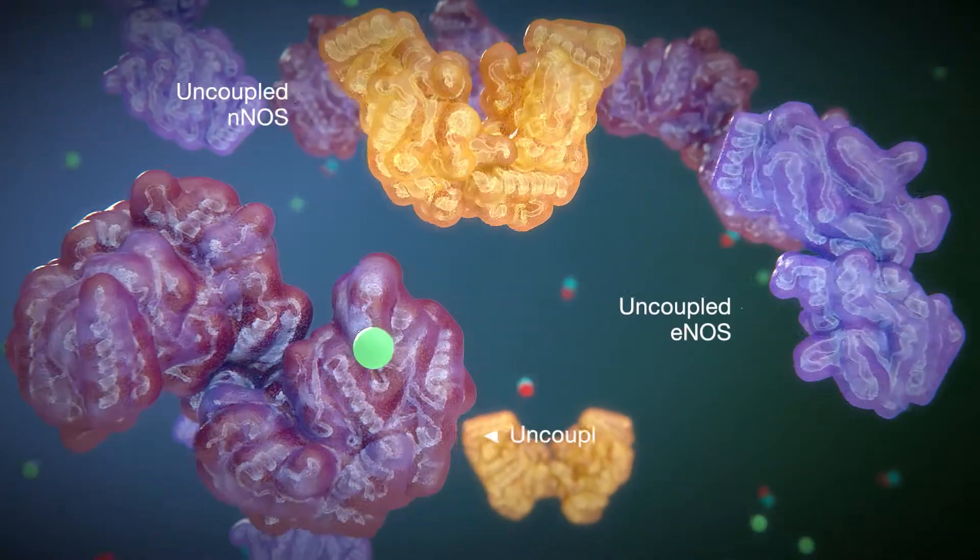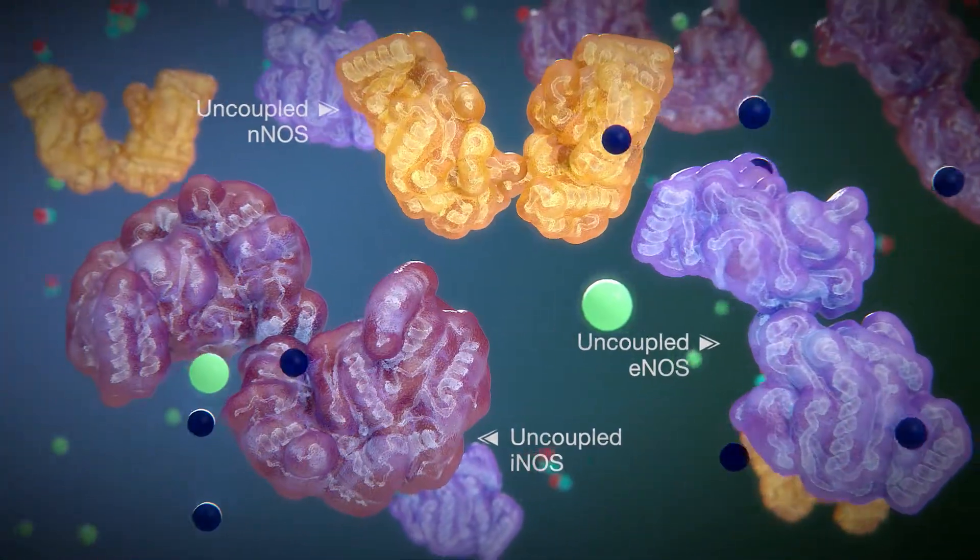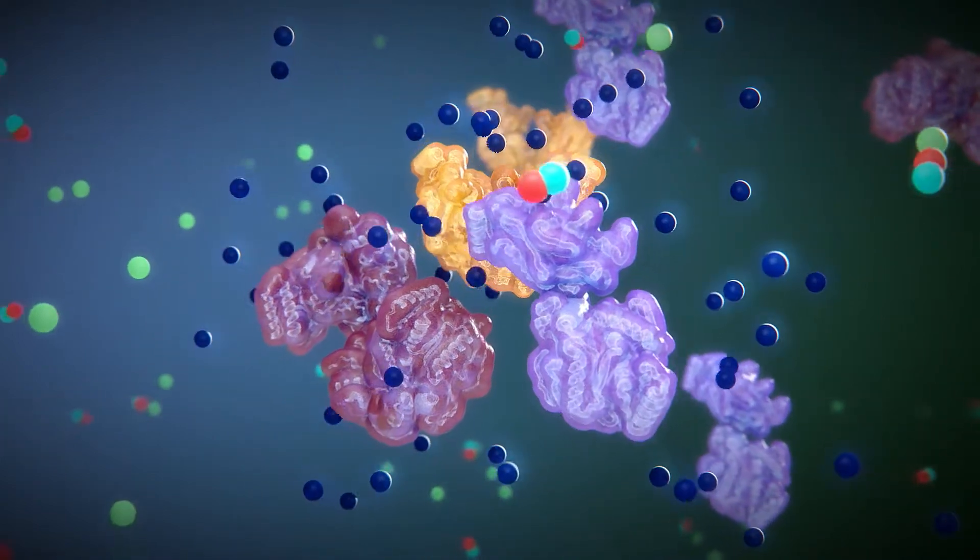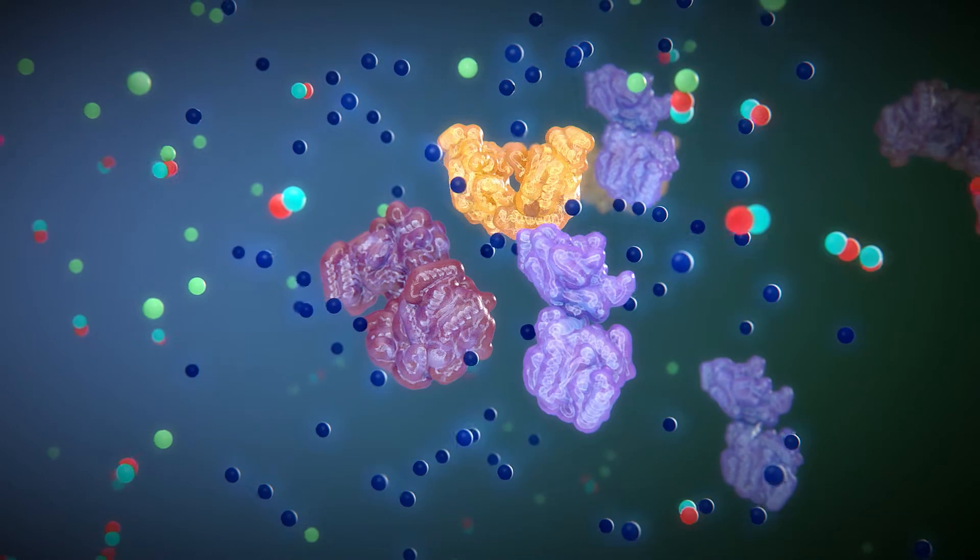Uncoupling of NOS in the absence of BH4 results in the production of free radicals. Overproduction of NO and free radicals results in the formation of peroxynitrites which are highly toxic.